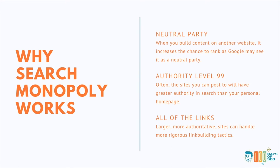Let's talk about why it works. Sometimes Google wants a neutral party. When you build content on another website, a good example would be anything that reviews stuff — whether it's a coffee review website, or if you're on Huffington Post and they have an article about the top 10 pieces of wedding jewelry, or something more in the tech side like G2 Crowd or Capterra — they want a seemingly neutral party to rank this stuff. These websites are also usually extremely authoritative.